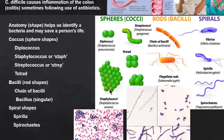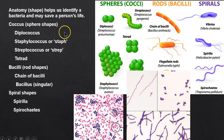Different bacterial shapes: cocci are round; diplococci are pairs; strep is a chain; tetrad is a group of four; staph is a cluster; bacillus can be rod-shaped in a chain. We also have different types of spirals — spirochetes and spirilla.